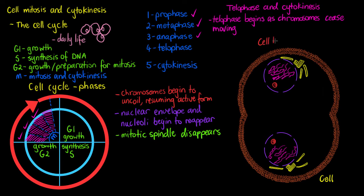For a brief moment before our cells completely split apart, we have a binucleate cell — a cell with two nuclei. That completes our telophase and mitosis. At this point, mitosis has finished.